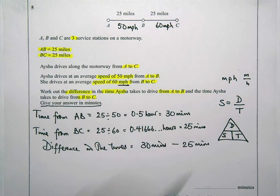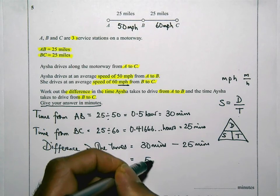So 30 minutes take away 25 minutes. And that's going to give me 5 minutes. And I'm going to write that in my answer space down at the bottom.